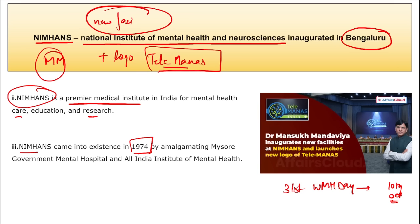Tele-MANAS is a national tele-mental health program aiming to provide mental health services as a universal human right. The national mental health survey published in 2015–16 revealed that almost 10% of the population is affected by mental health problems.